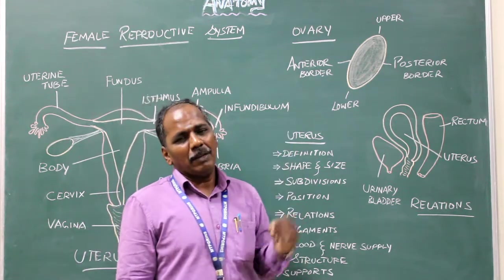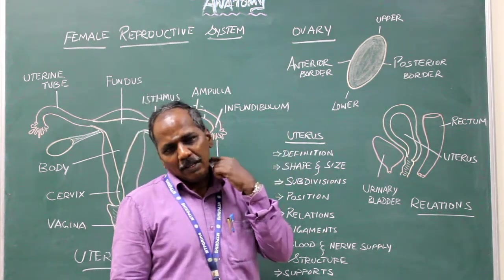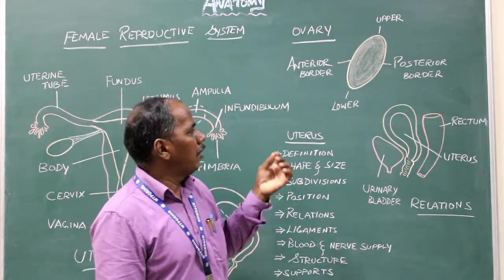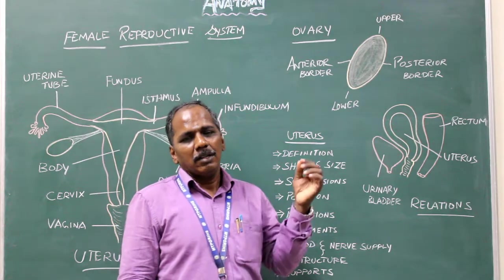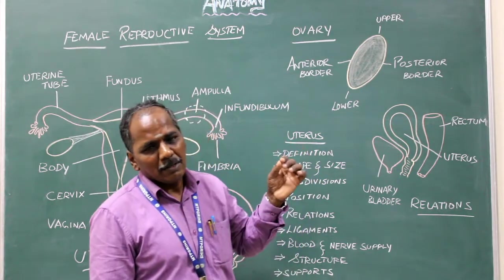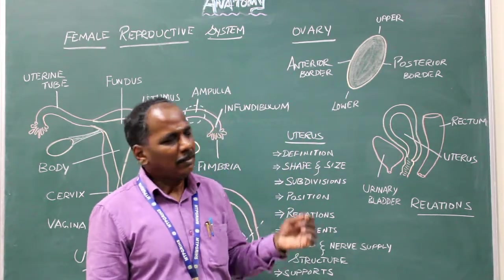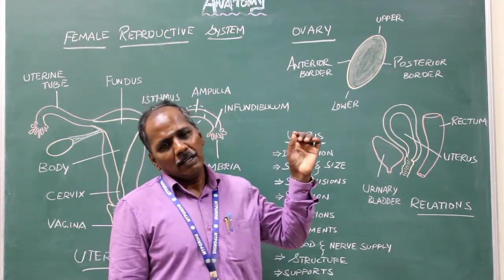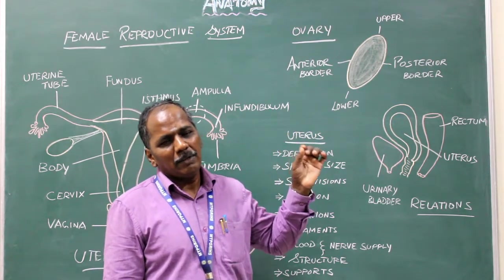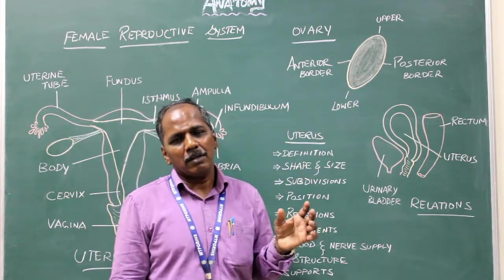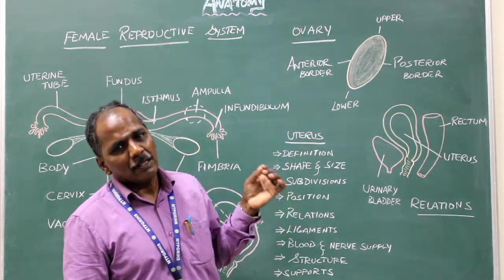Blood supply: right and left ovarian arteries. Venous drainage: right and left ovarian veins. Lymphatic drainage: it drains into pre- and para-aortic lymph nodes. Nerve supply: T11, T12, and L1 segments of the spinal cord for sympathetic; parasympathetic by pelvic splanchnic nerves.